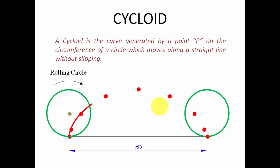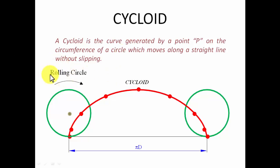This is what you call a cycloid. This was a circle rolling along a straight line. This rolling circle is also called a generating circle — in some books it's called a rolling circle, in others a generating circle, so not to worry about that. And this horizontal line is also referred to as a directing line.